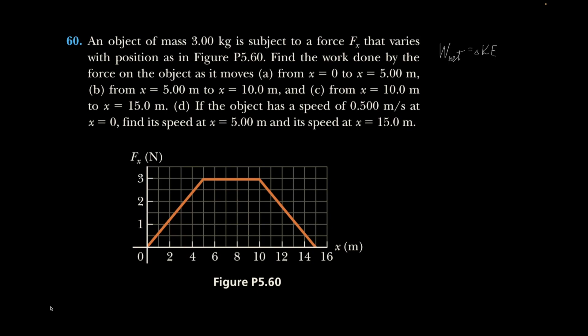First, find the work done by the force on the object as it moves from 0 to 5. So 5 is over here, so that's a triangle. One half base times height: one half times 3 times 5, so it's 15 over 2 — 7 and a half joules of work done as the object moves from 0 to 5 meters, from 5 to 10 meters, and from 10 to 15.